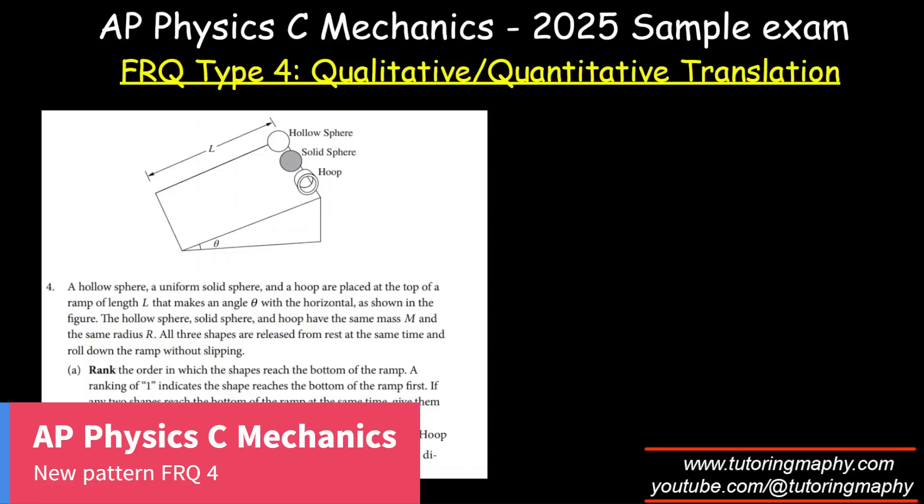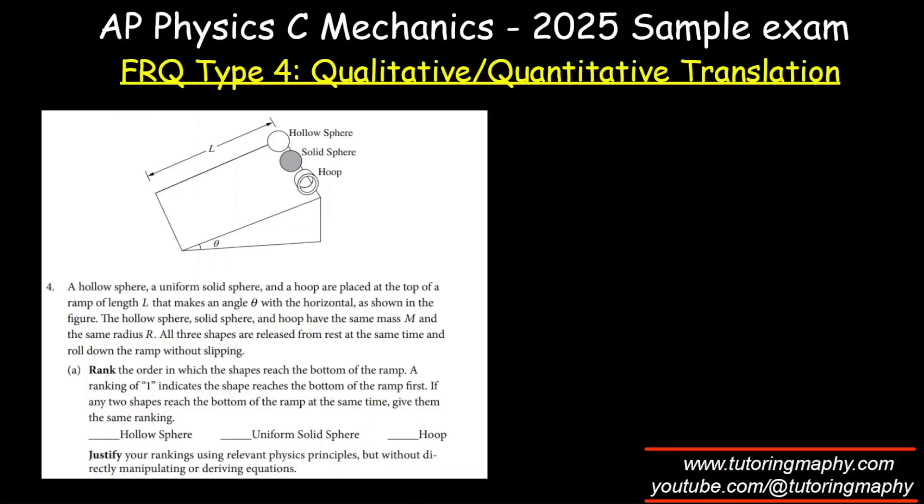It says that a hollow sphere, a uniform solid sphere, and a hoop are placed at the top of a ramp of length L at angle theta. They have the same radius R and are released at the same time with initial velocity zero. We have to rank them according to the time it takes to reach the bottom. Whichever reaches fastest or first should be ranked 1 and accordingly.